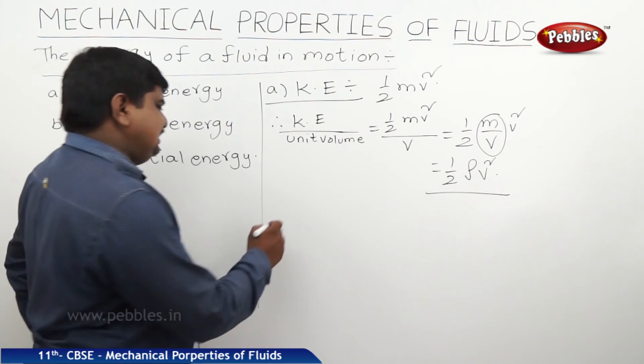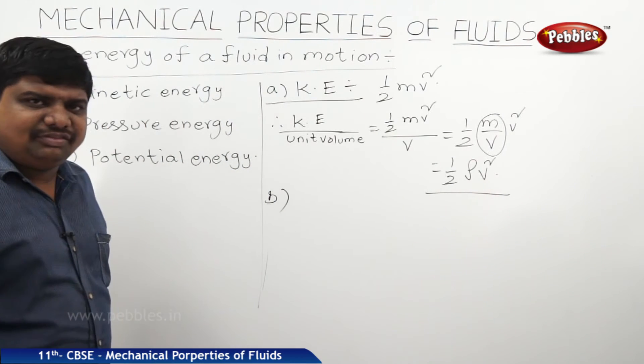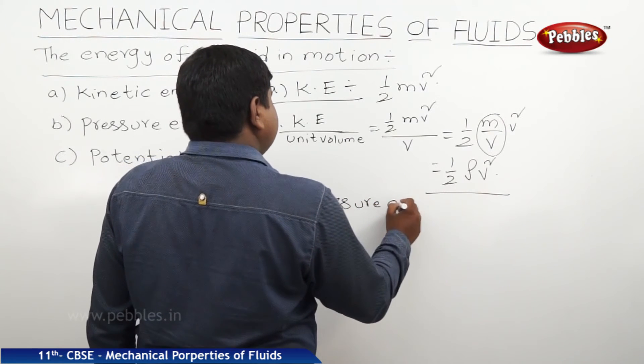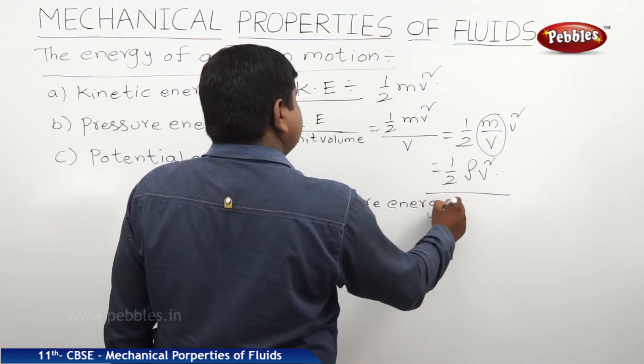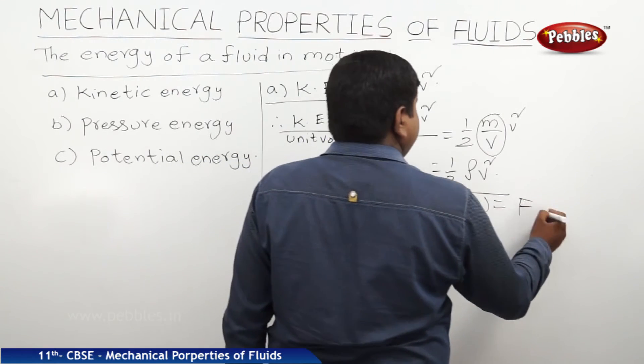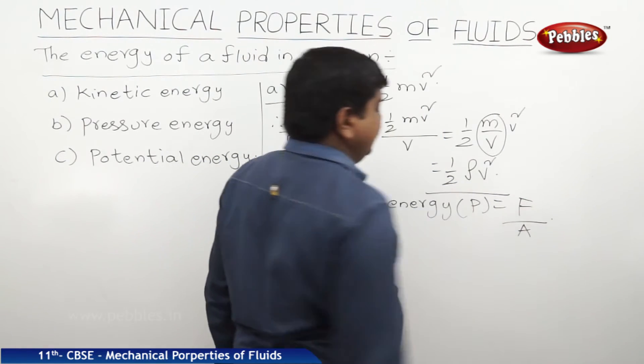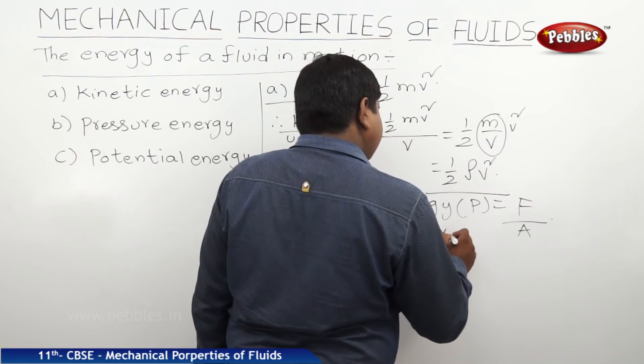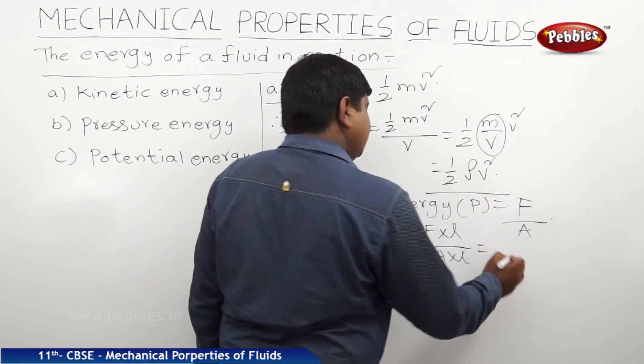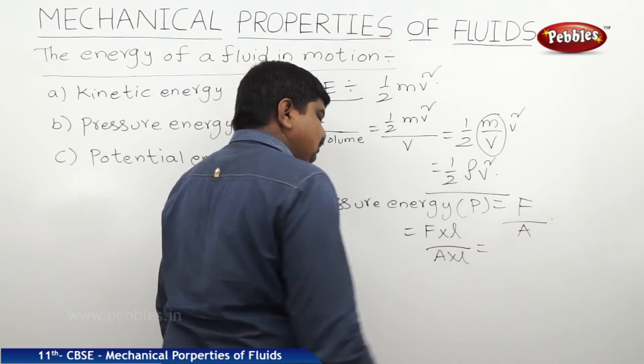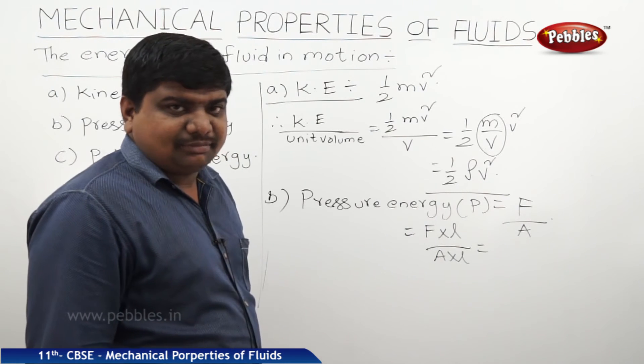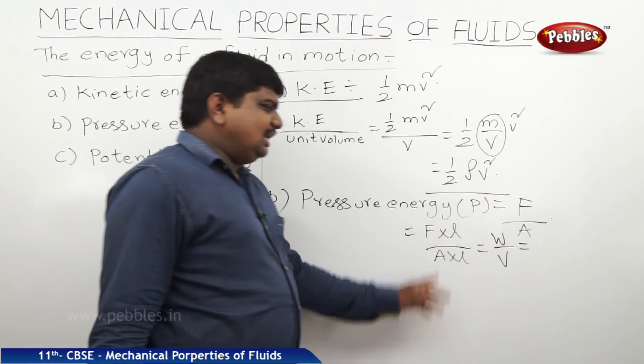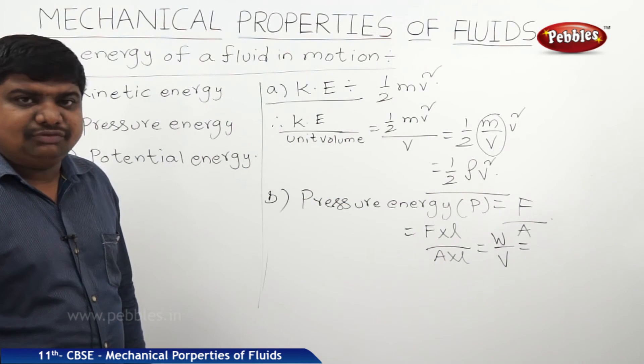The second energy is pressure energy. It is due to the pressure applied on the fluid element. Pressure P equals force by area, which is F times L by A times L. Since A times L is volume and F times L is work done, pressure energy is the energy consumed per unit volume.